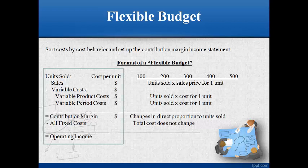Afterwards, select a range of units sold and write them across the top. Next, multiply the per unit amount that does not change by the quantity of units sold for each column. Total contribution margin will be different for each quantity of units sold. Subtract the total fixed cost, which will remain the same regardless of the quantity of units sold.